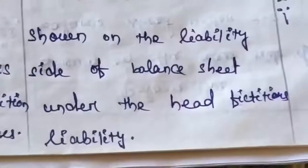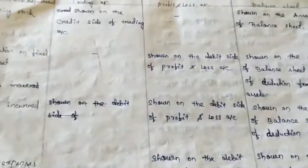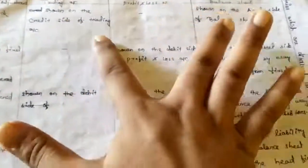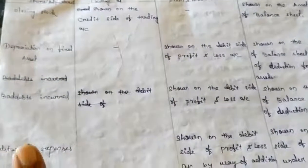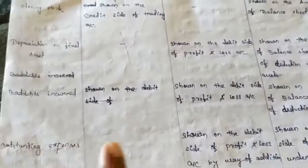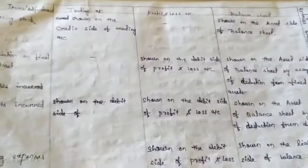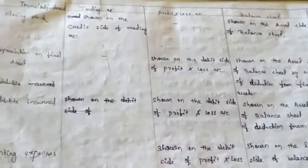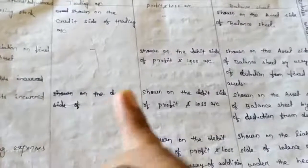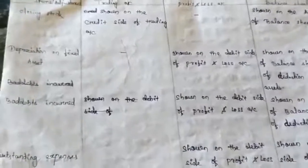These adjustments must be treated in any two financial statements. You have to see what kind of nature it is — whether it is an expense, a liability, or an income — and depending on the nature, make treatment in the appropriate financial statements. You also need to know which side: debit or credit side of trading and profit and loss account, and asset or liability side of the balance sheet.